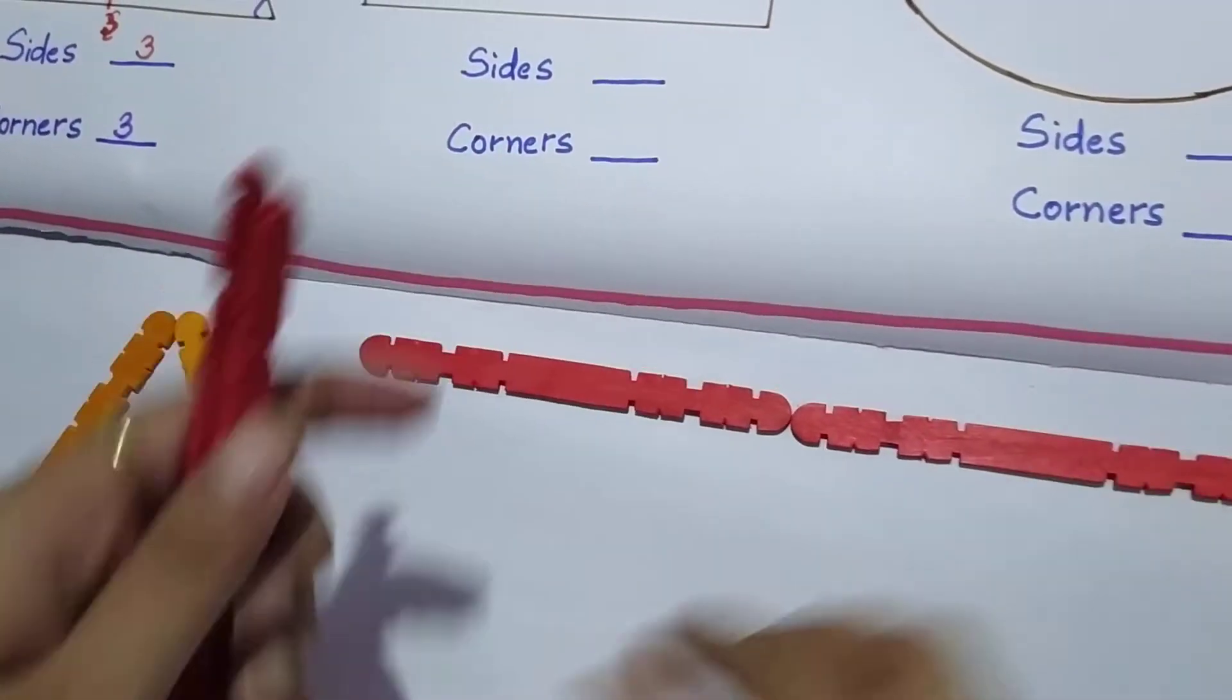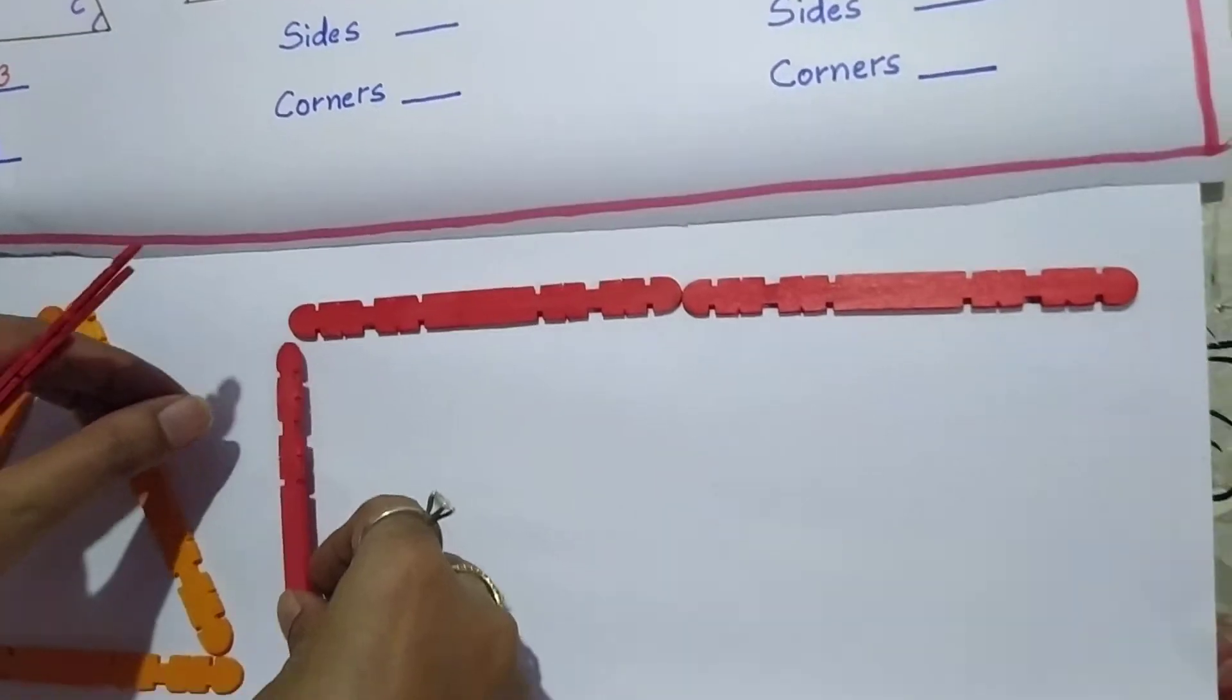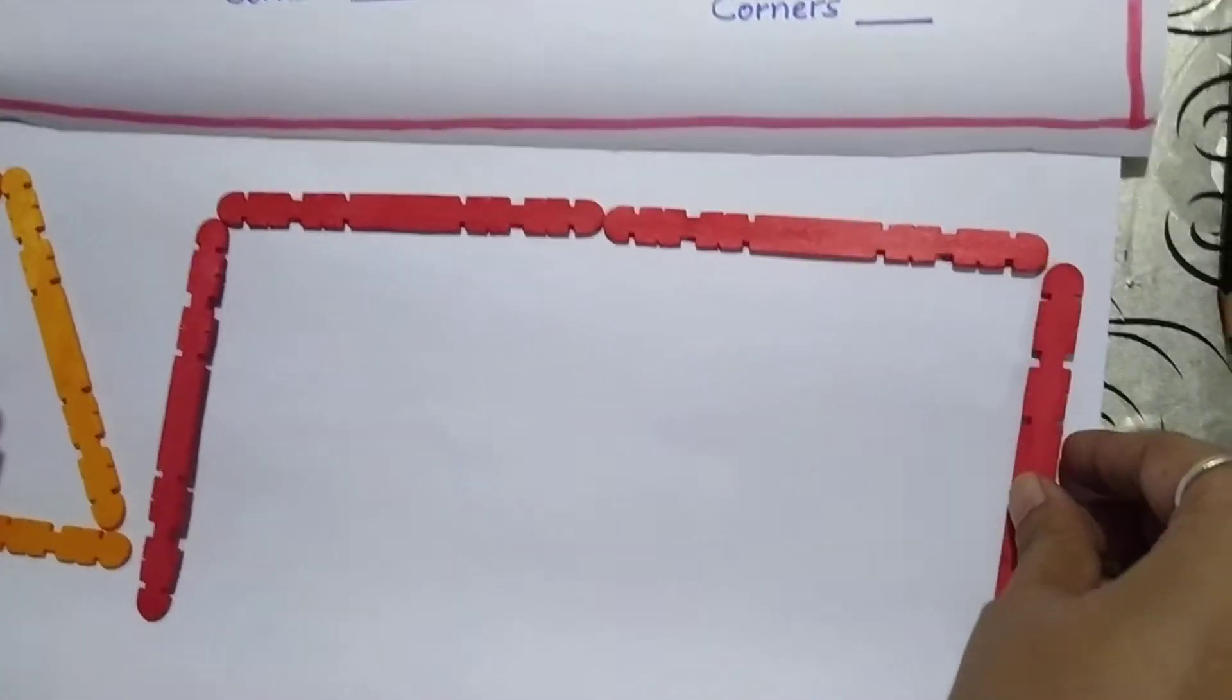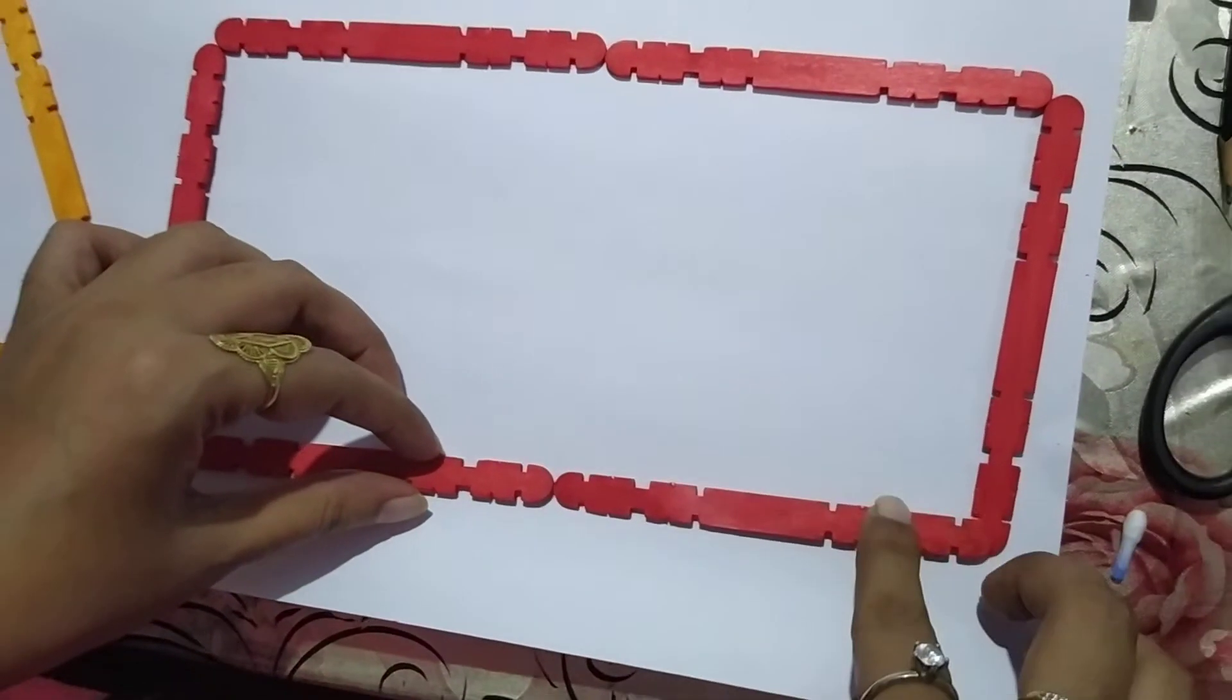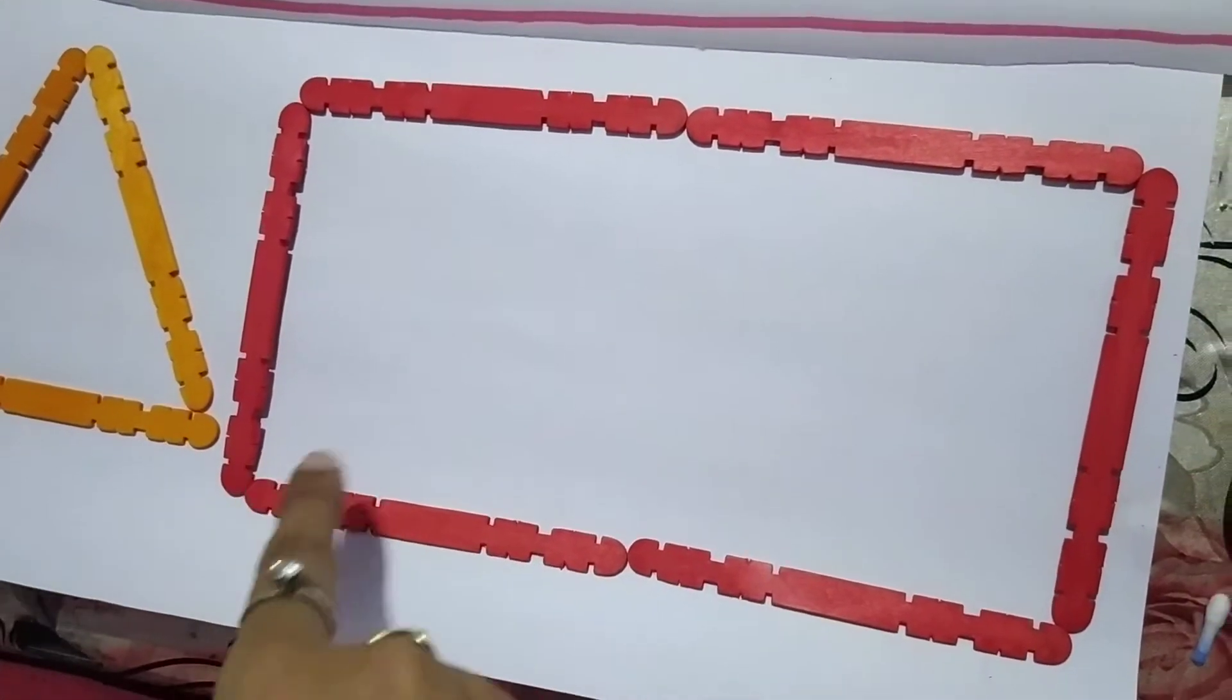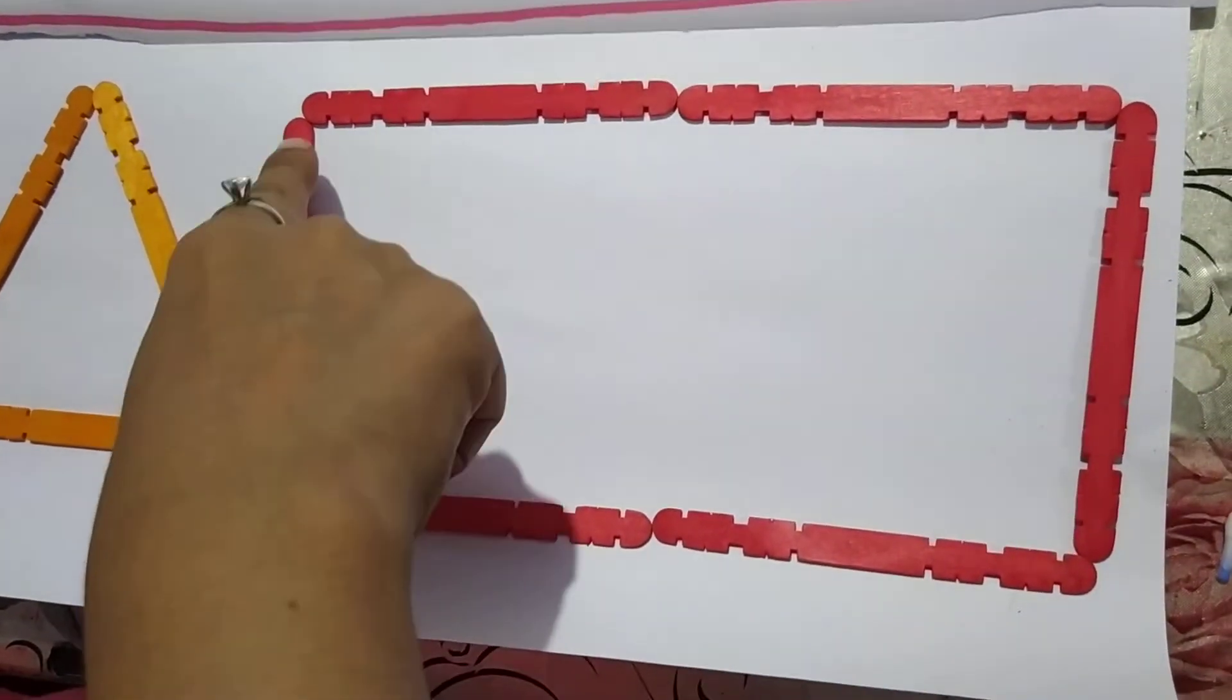This is a rectangle. So how many straight lines are there in the rectangle? Let us see how many straight lines there are. One, two, three and four. So there are four straight lines.